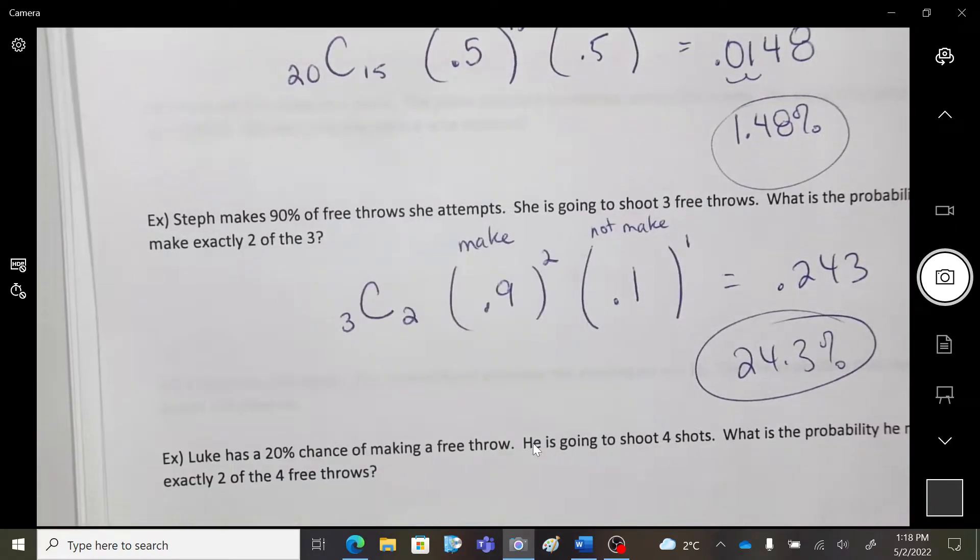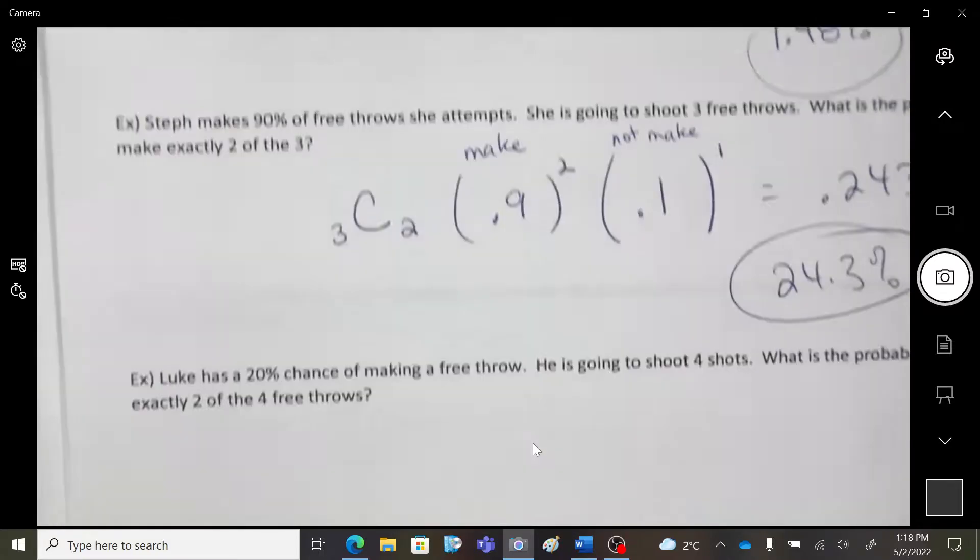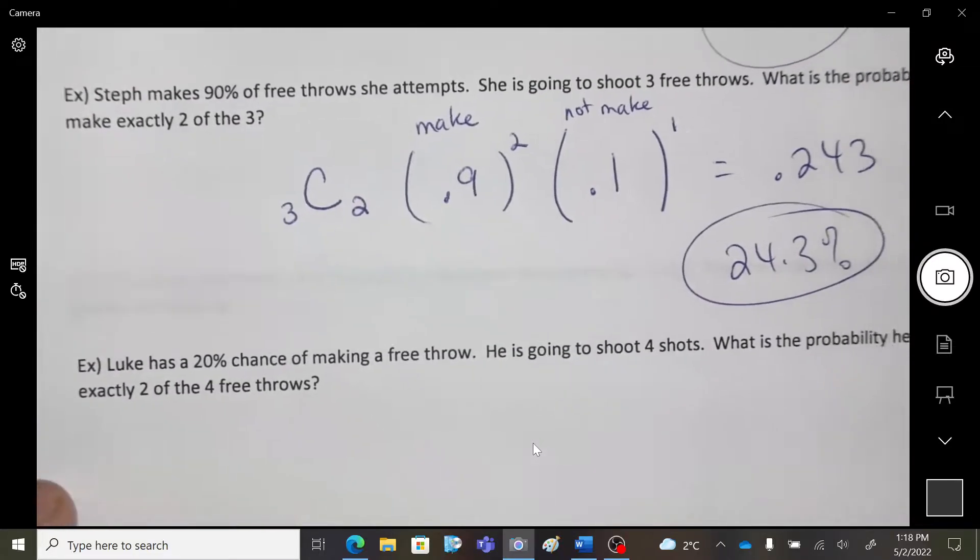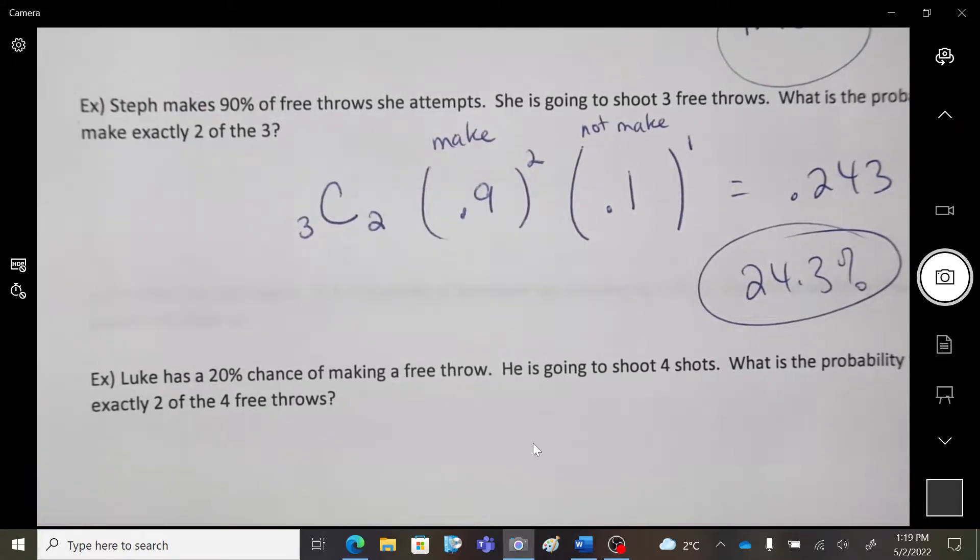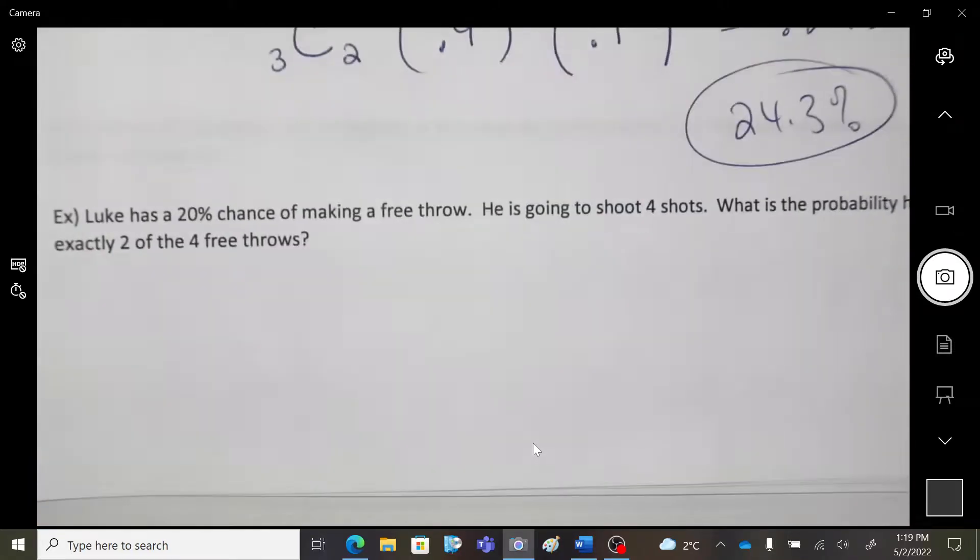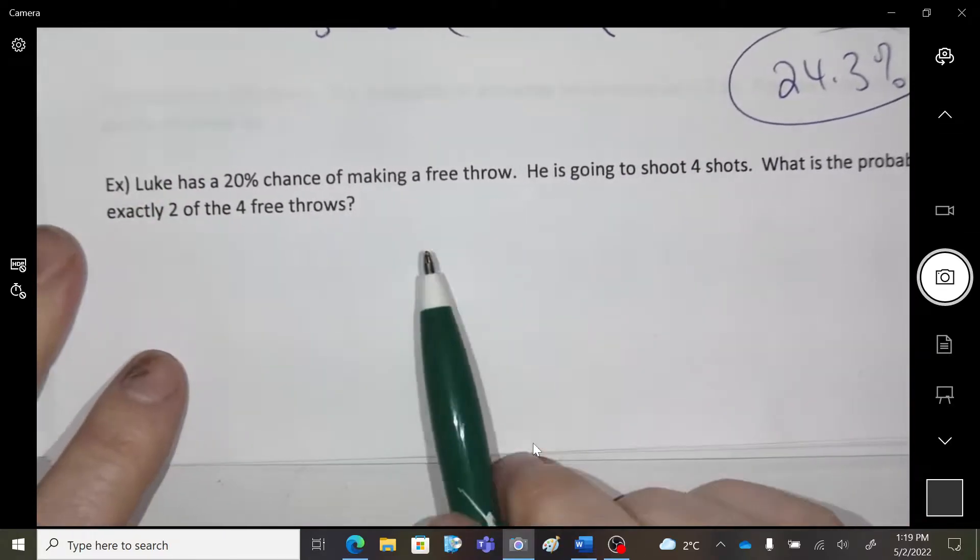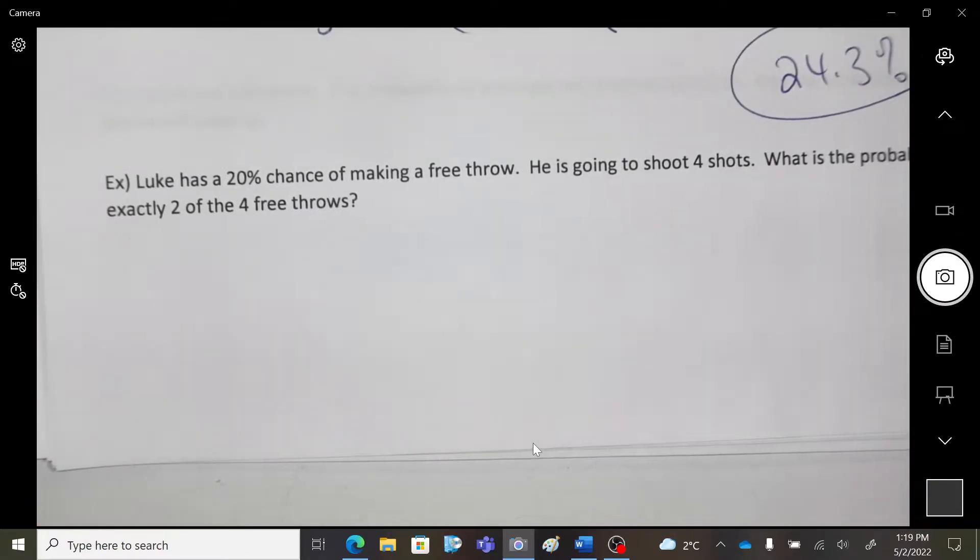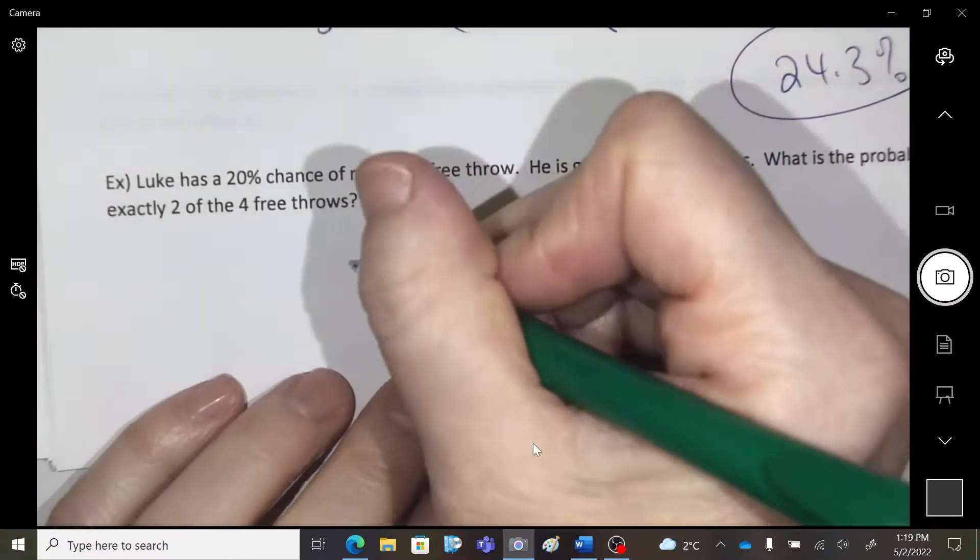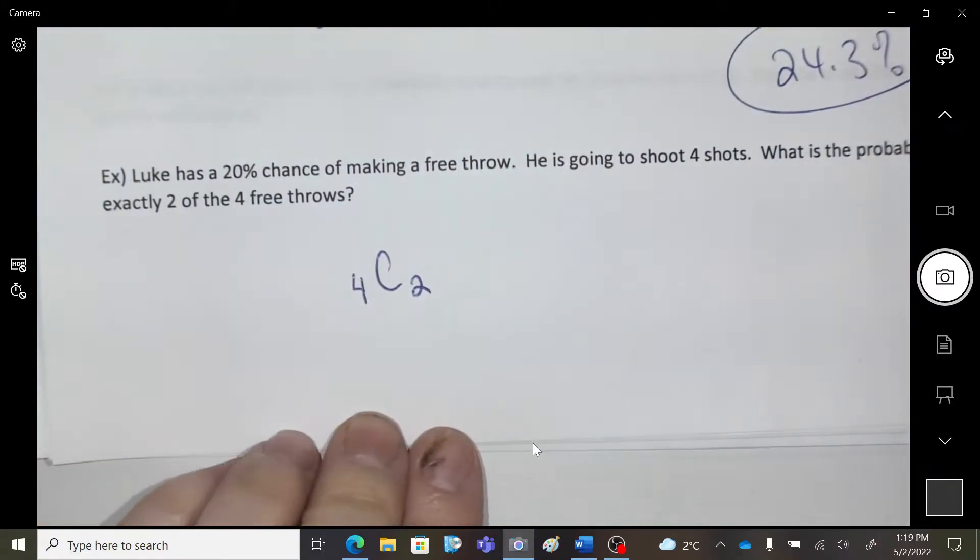Okay, so that was a little bit of a higher probability that that would happen. Okay, last one. Luke has a 20% chance of making a free throw. He's going to shoot four. What's the probability of getting exactly two shots? So four shots. We're going to choose for him to make two of them.